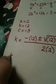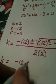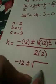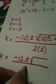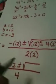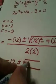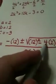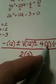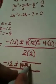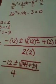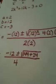So, k is equal to a negative 12 plus or minus the square root of something all over 4. Now, what's under the radical is very crucial that we do this correctly. So, let's see. 12 squared is 144. And negative 4 times 2 is negative 8. Negative 8 times negative 3 is a positive 24.